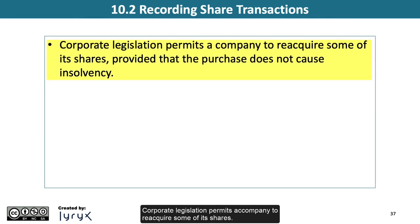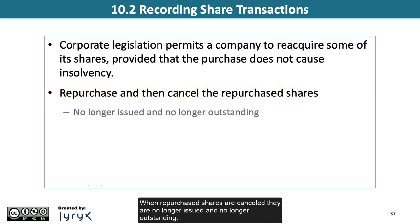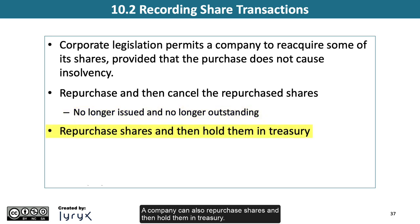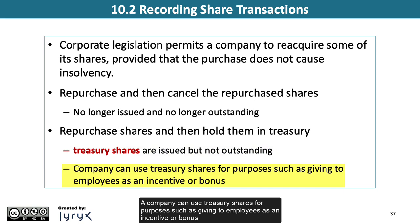Corporate legislation permits a company to reacquire some of its shares, provided that the purchase does not cause insolvency. A company can repurchase and then cancel the repurchased shares; when cancelled, they are no longer issued and no longer outstanding. A company can also repurchase shares and hold them in treasury. Treasury shares are issued but not outstanding, and can be used for purposes such as giving to employees as an incentive or bonus.